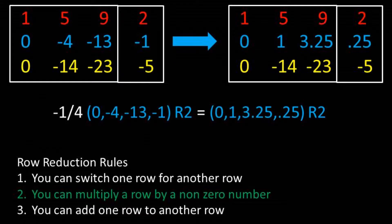For our next step, we want to get a 1 in column 2, row 2. Let's multiply row 2 times negative 1 fourth.